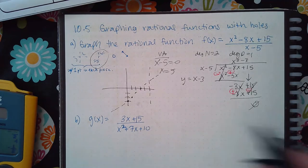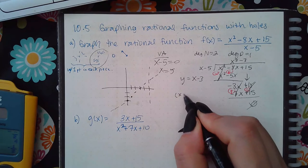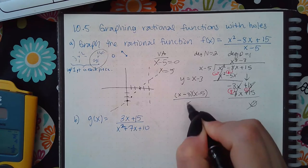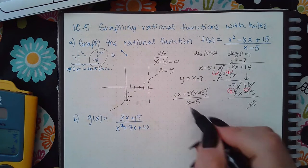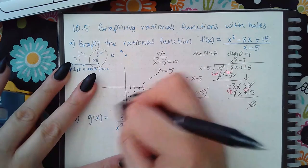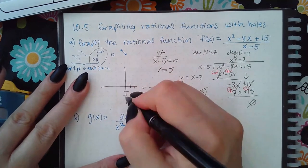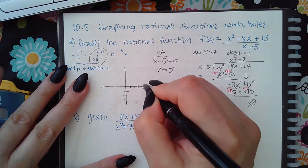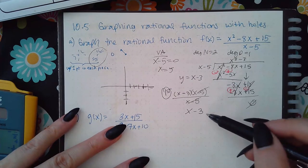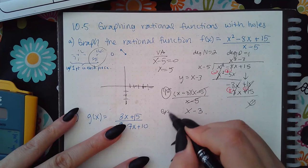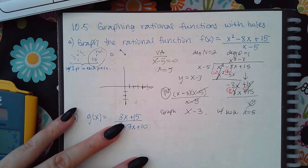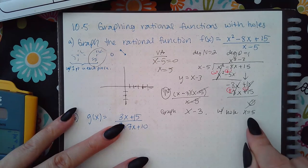Actually, reduce the function first to figure out where the hole is. If I factor the top I get (x minus 3)(x minus 5) over (x minus 5), which simplifies to x minus 3. The graph is not going to have any asymptotes at all — I should have done this simplification first. You cannot determine asymptotes unless your function is already in lowest terms.